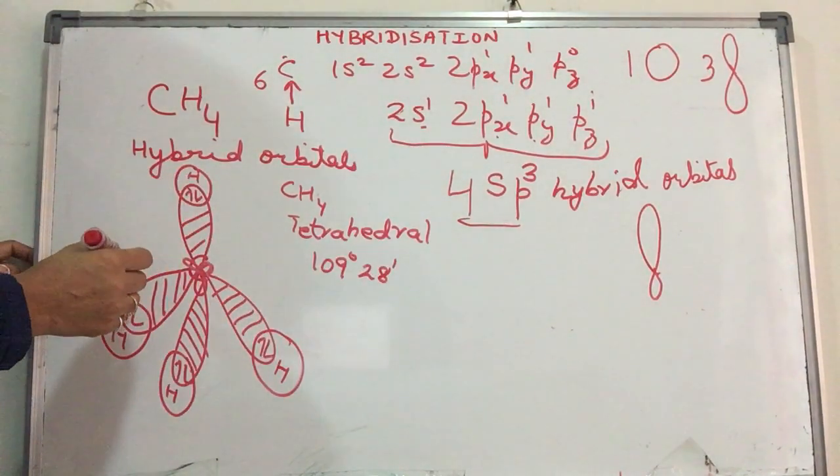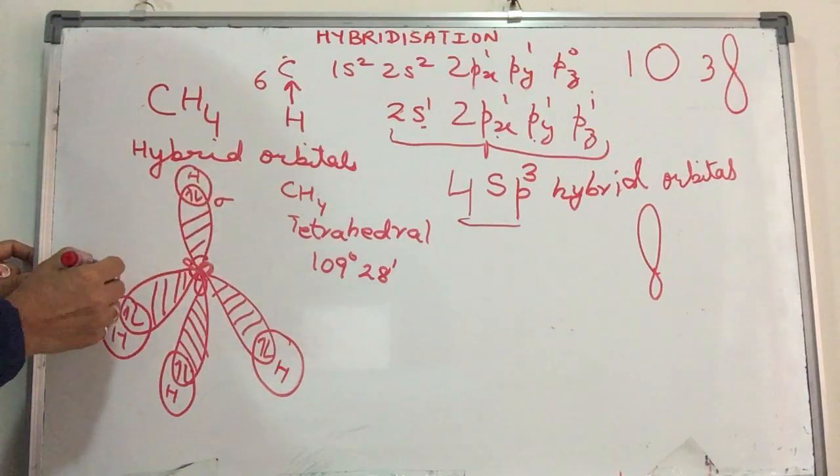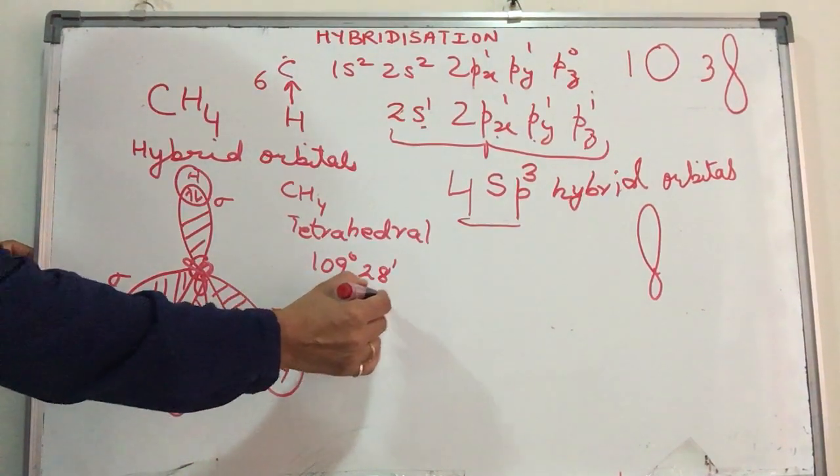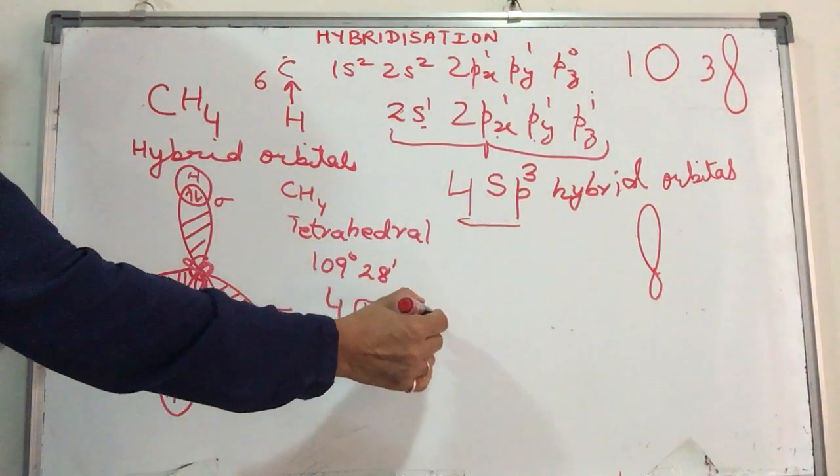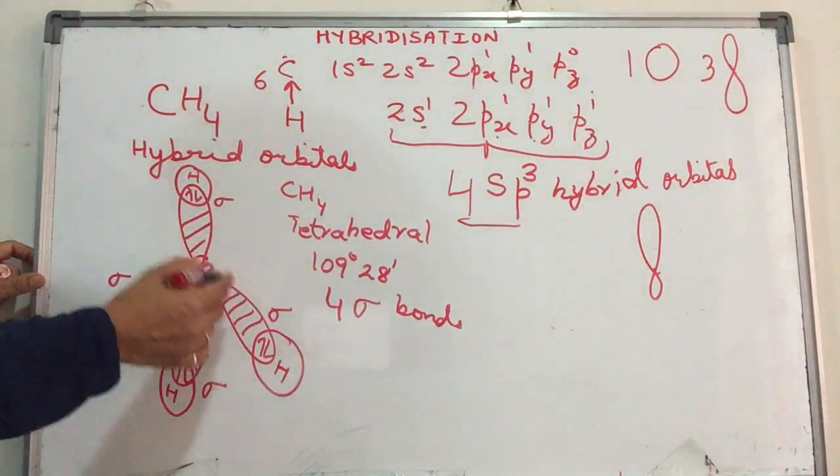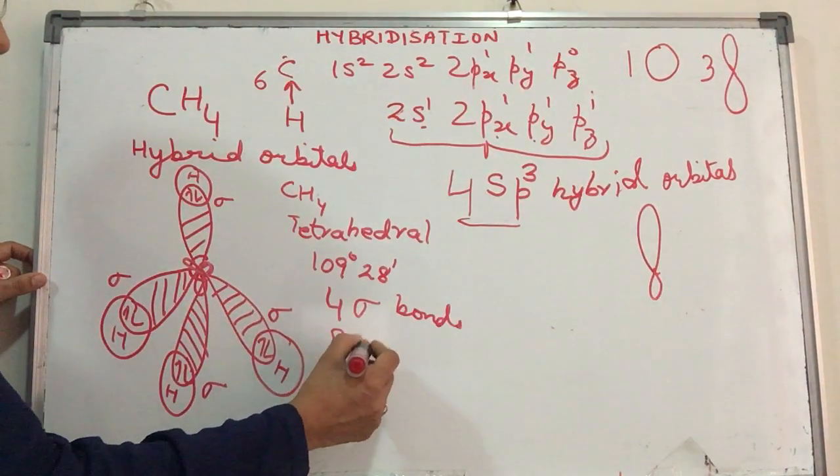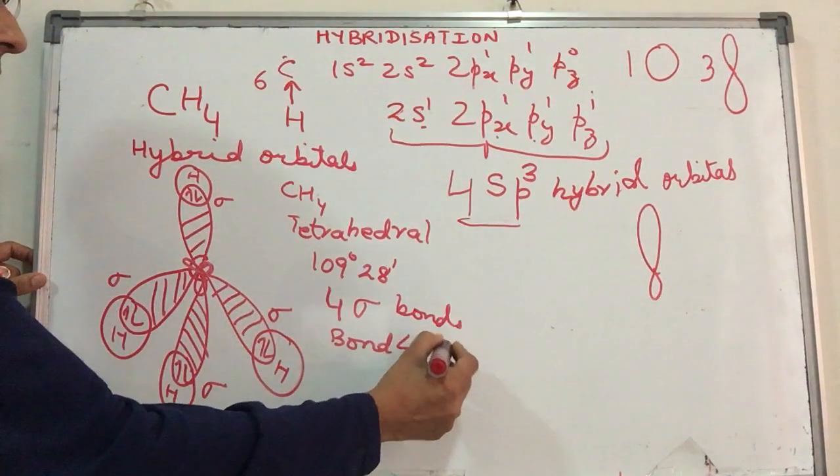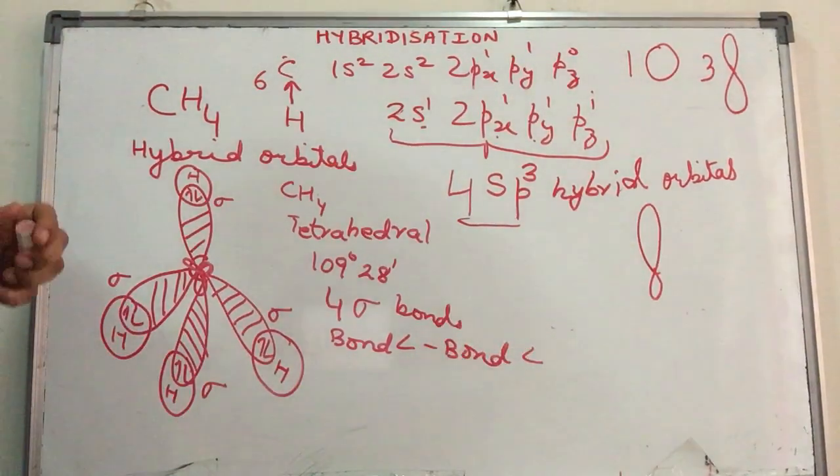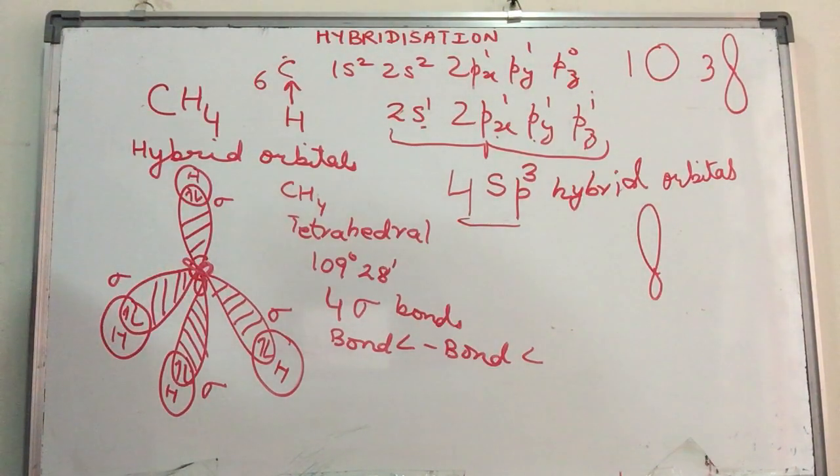There are sigma bonds. Sigma bonds involve head-on overlap. One sigma, two sigma, three sigma, four sigma. All are sigma bonds, four sigma bonds. The kind of repulsion happening according to VSEPR theory is bond angle repulsion. Bond angle repulsion is the least and we have a tetrahedral shape for methane.